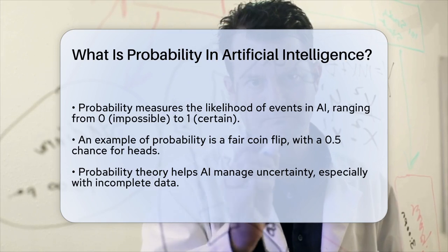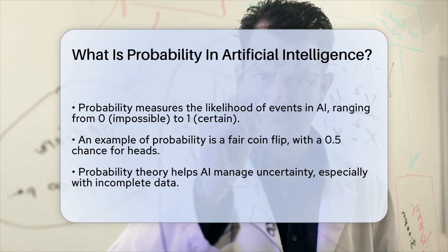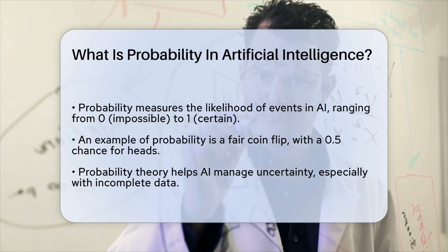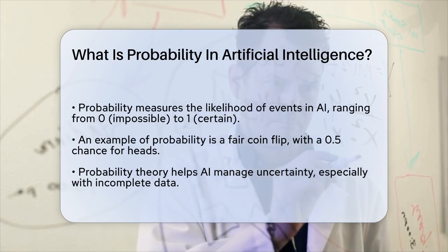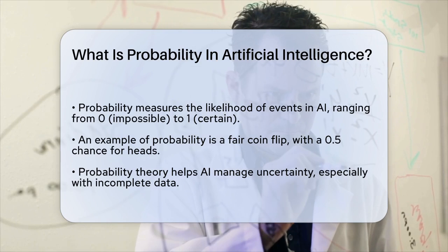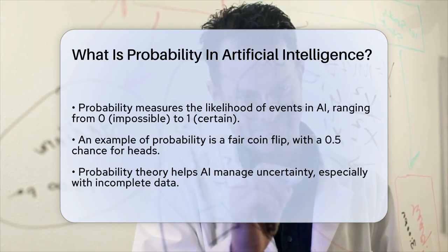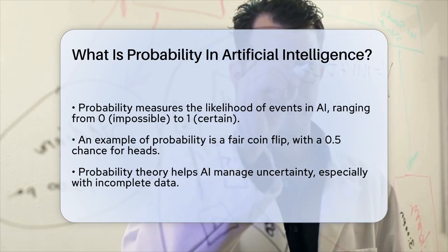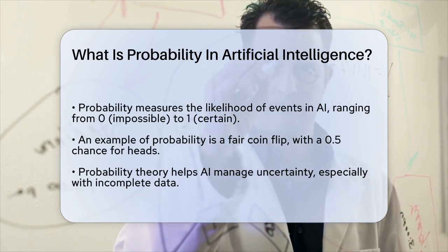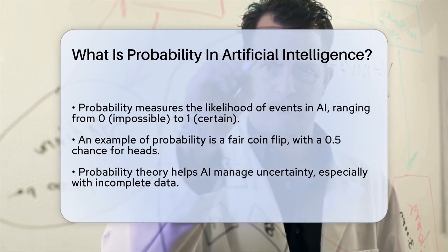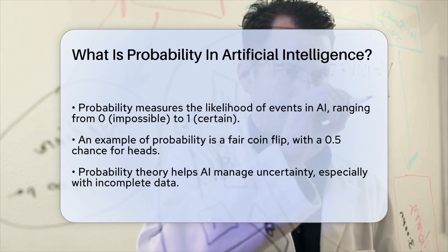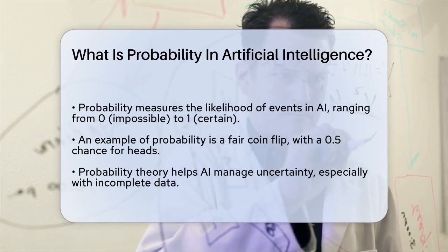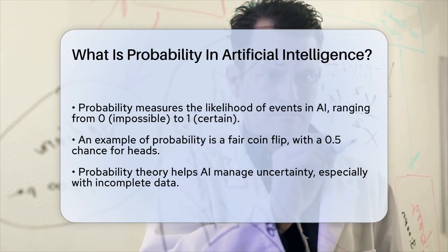Probability in AI is essentially a way to measure the likelihood of different events or outcomes. It's a number between zero and one, where zero means something is impossible and one means it's certain. For example, if you flip a fair coin, the probability of it landing on heads is 0.5, or one-half.